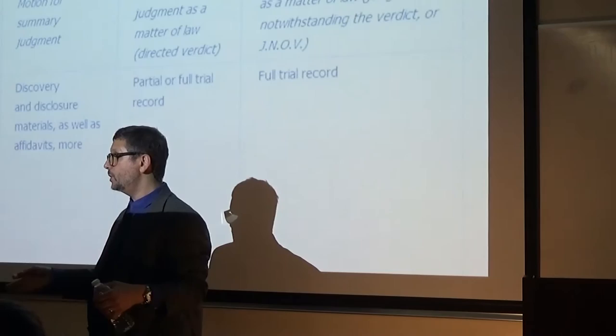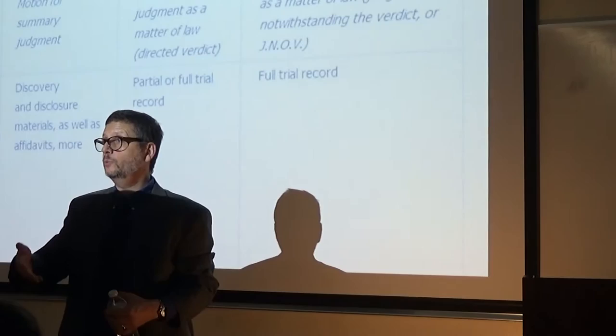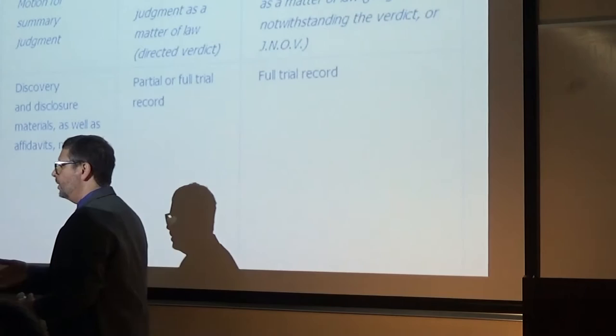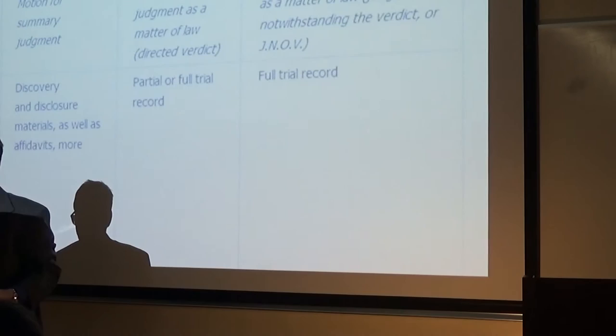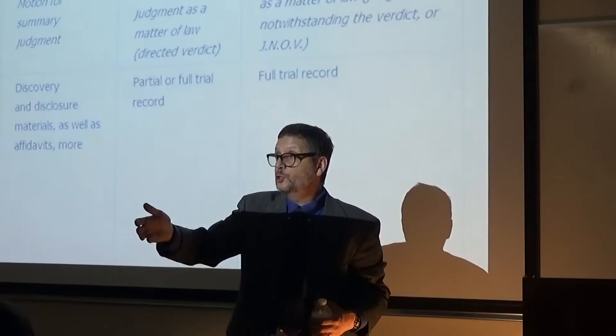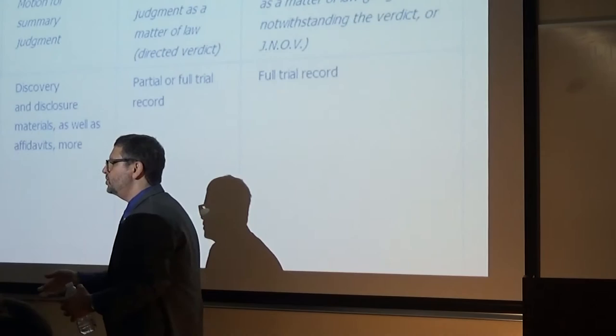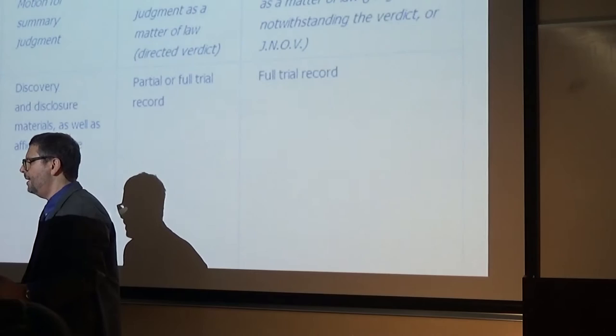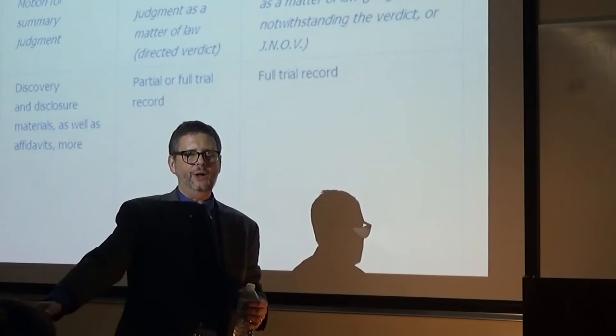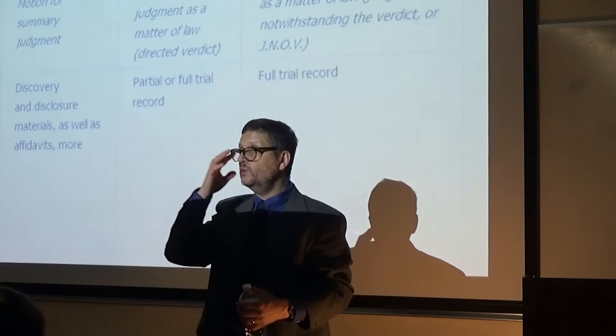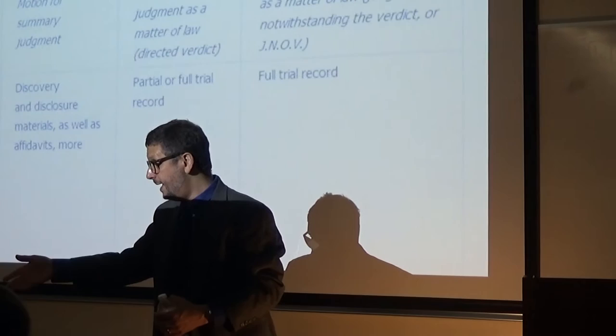Other bases for new trials include some sort of mistake made during trial that caused harm — not harmless error, but rather harmful prejudicial error. For instance, testimony that was admitted but should have been inadmissible, say because it was hearsay — getting back to motions in limine. Also juror misconduct, or the judge giving the wrong law during jury instructions. It wasn't just any error, but an error that had a real probability of changing the result. Under Rule 61 we have the harmless error standard — you don't get a new trial granted on the basis of error unless the error was not harmless.